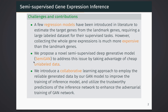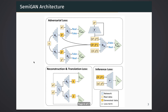In this illustration figure, we use x to denote the landmark genes and y for target genes. We consider three different kinds of losses in our model. Firstly, we consider the adversarial loss as in traditional GAN structure and learn the distribution of landmark genes, target genes, as well as their joint distribution.